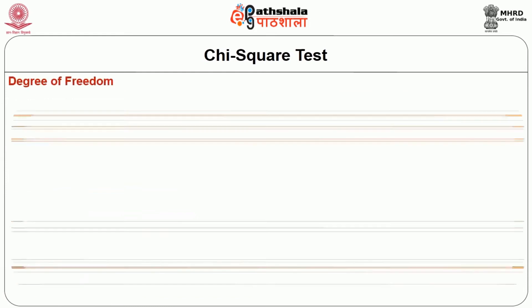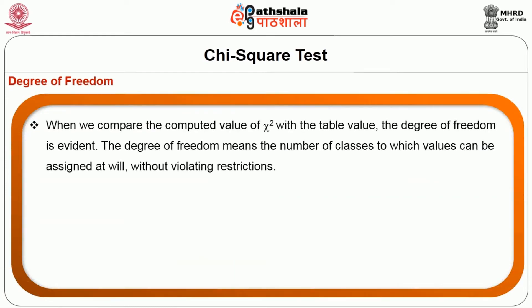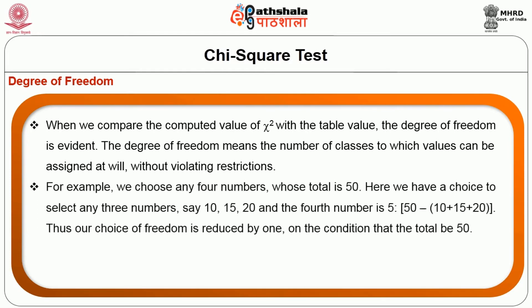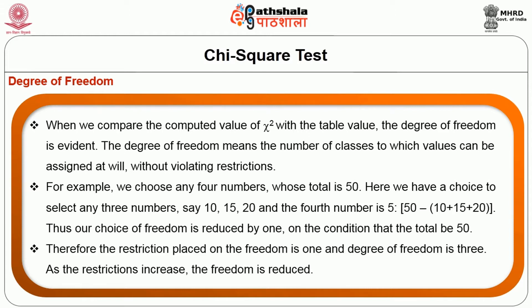Degrees of freedom: When we compare the computed value of chi-square with the table value, the degree of freedom is evident. The degree of freedom means the number of classes to which values can be assigned at will without violating restrictions. For example, if we choose any four numbers whose total is 50, we have a choice to select any three numbers, say 10, 15, 20, and the fourth number is 5. Thus our choice of freedom is reduced by 1, on the condition that the total be 50. Therefore, the restriction placed on the freedom is 1 and the degree of freedom is 3.